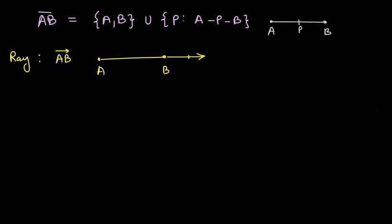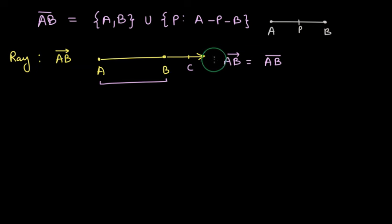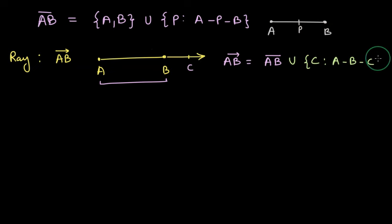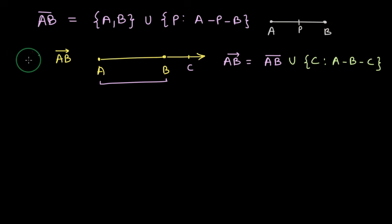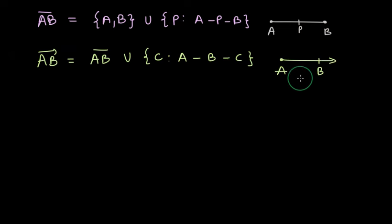Let us assume there is some point C after B such that B is between A and C. We can write ray AB in set notation as the union of segment AB and all the points that extend after B. These points can be described by some point C such that point B is between points A and C — C could be anywhere after B with the required condition that B is between A and C. So ray AB = segment AB union every point C such that point B is between points A and C.